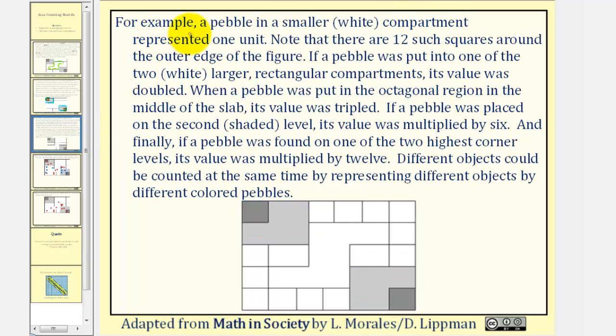For example, a pebble in a small white compartment represented one unit. So, looking at our diagram here, all these compartments would be worth one. If a pebble was put into one of the two white larger rectangular compartments, its value is doubled. So, pebbles in this compartment and this compartment were doubled, or worth two each. When a pebble was put into the octagonal region in the middle of the slab, its value was tripled, which would be this region here.